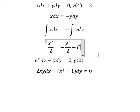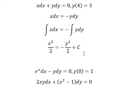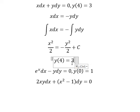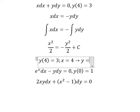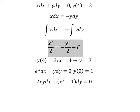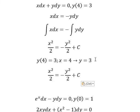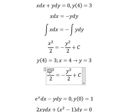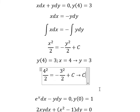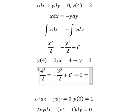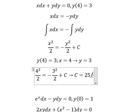And we have C. Next, we apply the initial condition: when x equals 4, y equals 3. So we substitute 4 in here and 3 in here to find the value of the constant, and we get C equals 25 over 2.